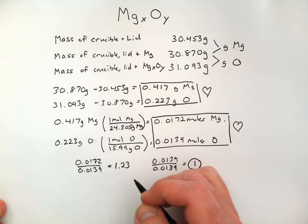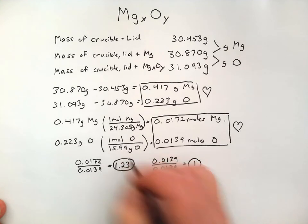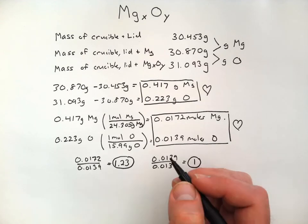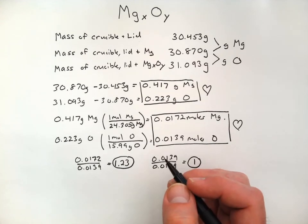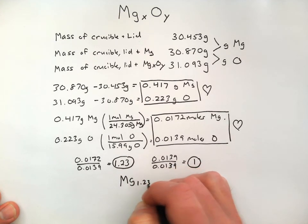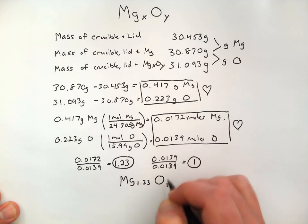Now, my calculator gave me a bunch more decimals than that. But, I'm rounding it to 3 because that's all the significant digits that I have. And, here, I've kind of reached this point where I now have a 1 in the formula. So, my formula, right now, could be written Mg1.23O1.